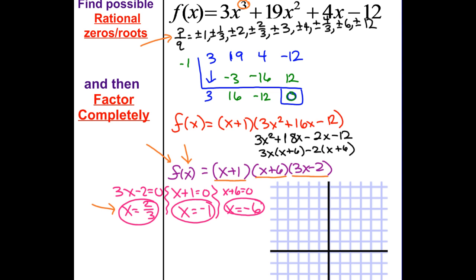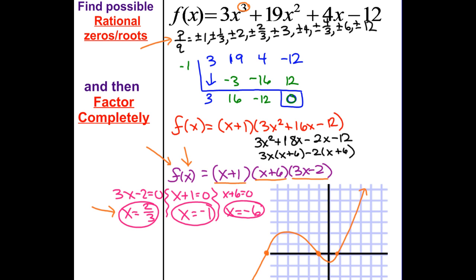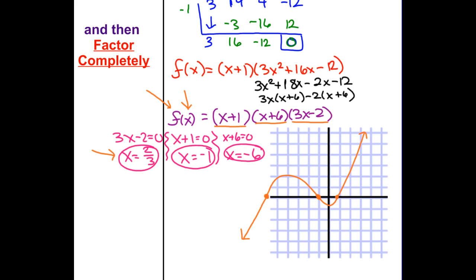Now we know it's a degree 3 with a positive leading coefficient, so it's going to start down and end up. We're going to go through these three zeros: negative 6, negative 1, and positive 2/3, which is about right there. Since I'm sketching it, we start down, come back around to hit those zeros, and then end up. The odd degree with a positive leading coefficient starts down and ends up. That's just a sketch — if you graph it on your graphing calculator it might look a little different.